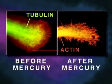Shown here is a neurite growth cone stained specifically for tubulin and actin, before and after mercury exposure. Note that the mercury has caused disintegration of tubulin microtubule structure.